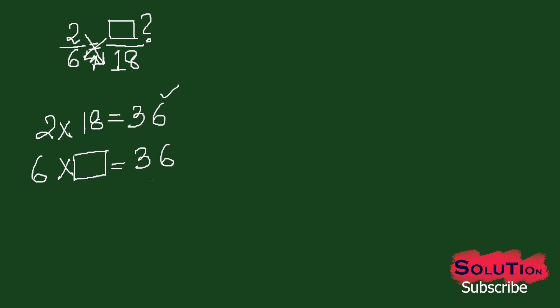That means 6 and the missing number, if I multiply, must give 36. So what number multiplied by 6 gives 36? That number is 6. So in this box I will write 6, making it 6 by 18. This is how we can find out the missing number.